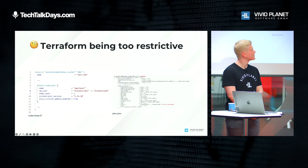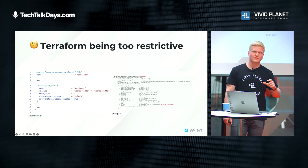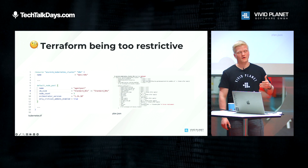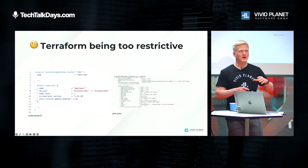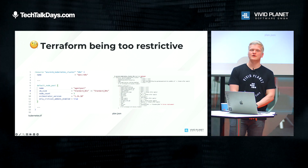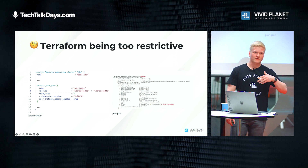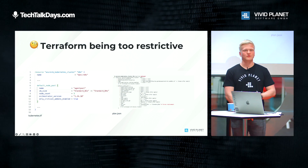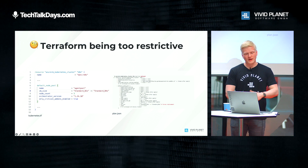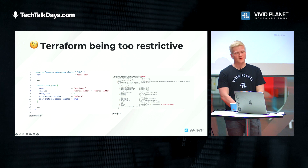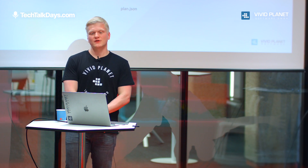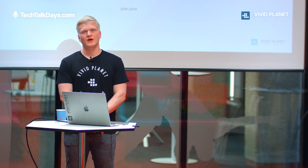This brings us to a second problem: if you want to change such a value, it might not be possible with Terraform. We actually had this problem. Your default node pool requires you to specify a VM size, and you may want to change it due to higher demand or a new generation being released. If you try to make that change using Terraform, the plan suggests it will tear down the default node pool — and this will tear down the whole cluster, causing downtime for your applications.